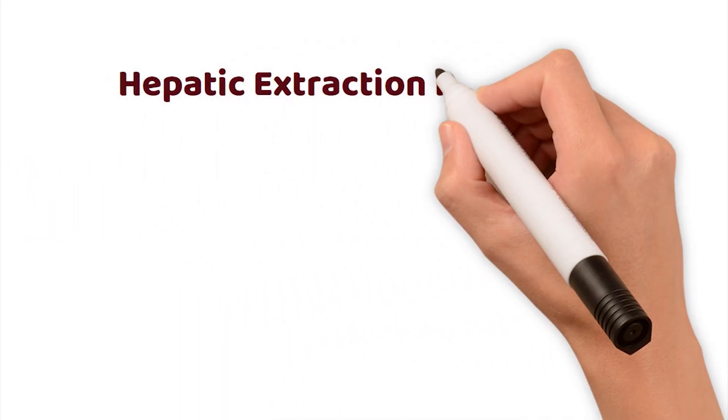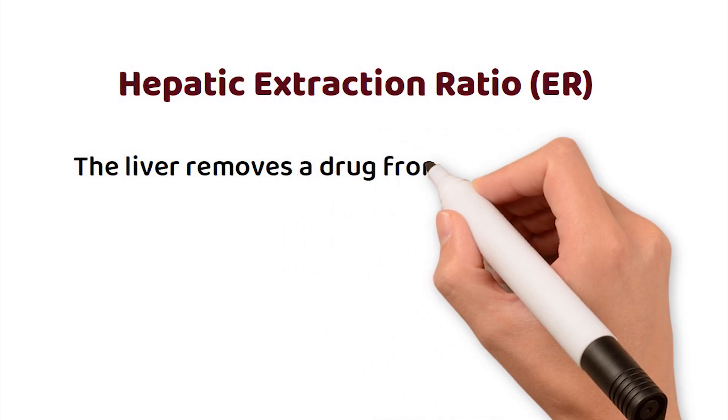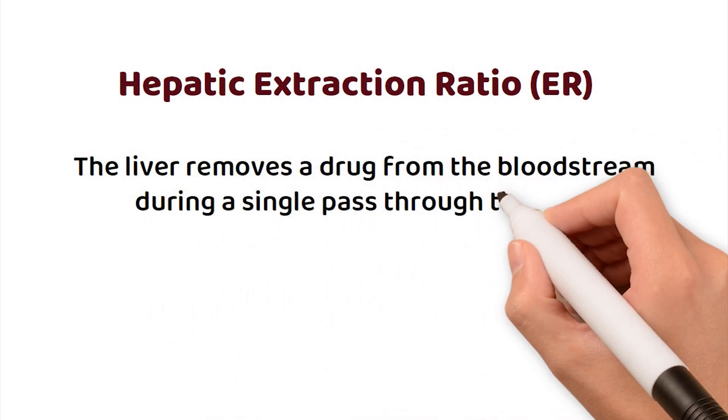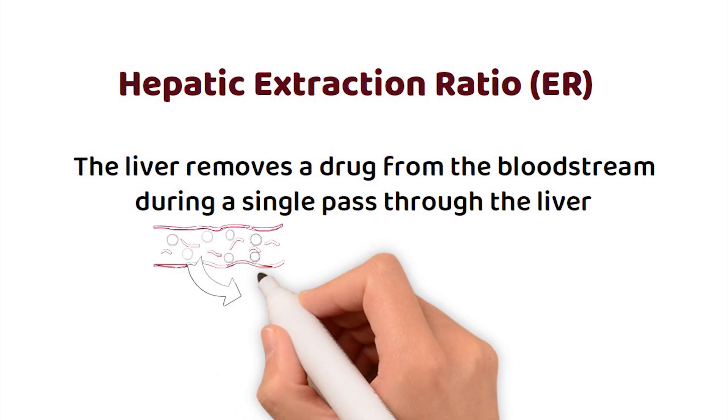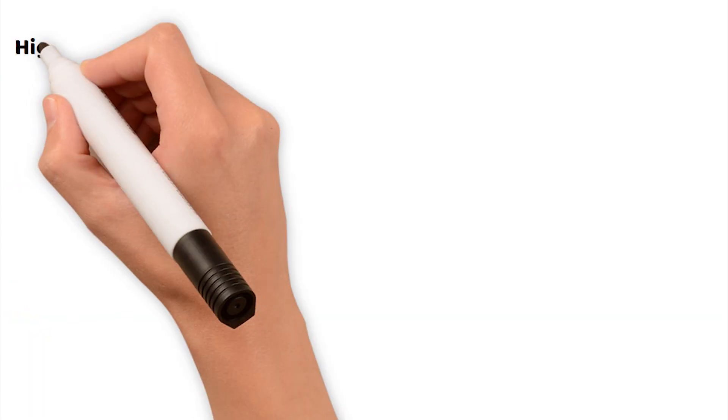The hepatic extraction ratio tells us how efficiently the liver removes a drug from the bloodstream during a single pass through the liver. If the liver removes all of the drug, the extraction ratio is 1. That's 100% clearance in one go. Based on this value, we categorise drugs into three main groups.